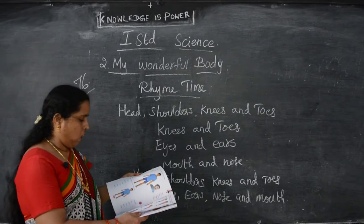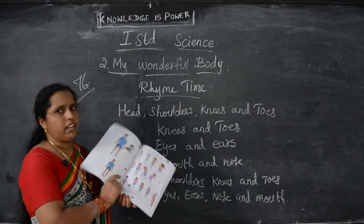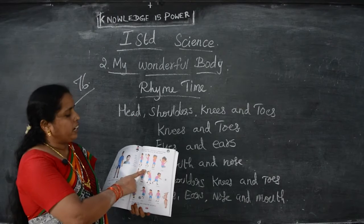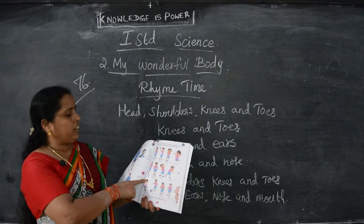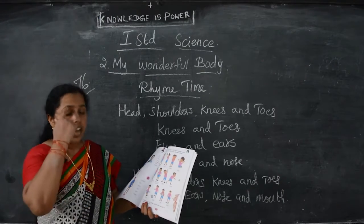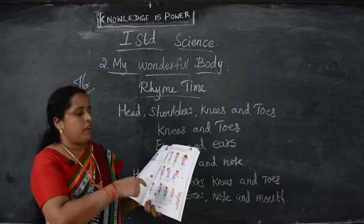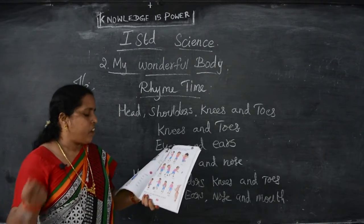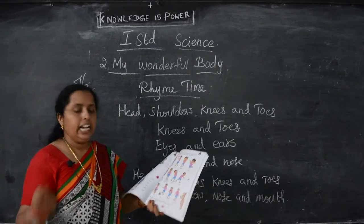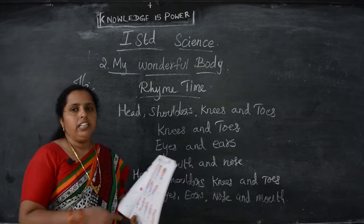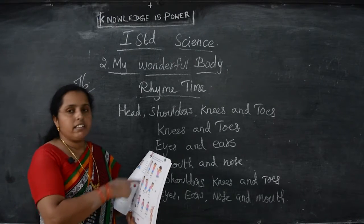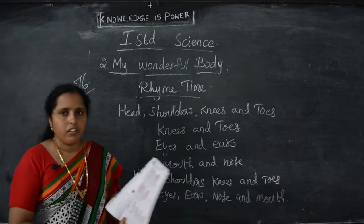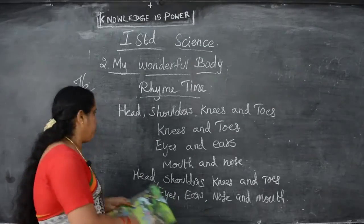Next, Varun is doing some actions. What are all the actions he is doing? Walking, catching, squatting, jumping, touching the nose, raising the eyebrows, bending, throwing, skipping, kicking, lifting, blinking — these actions are all done by little Varun.